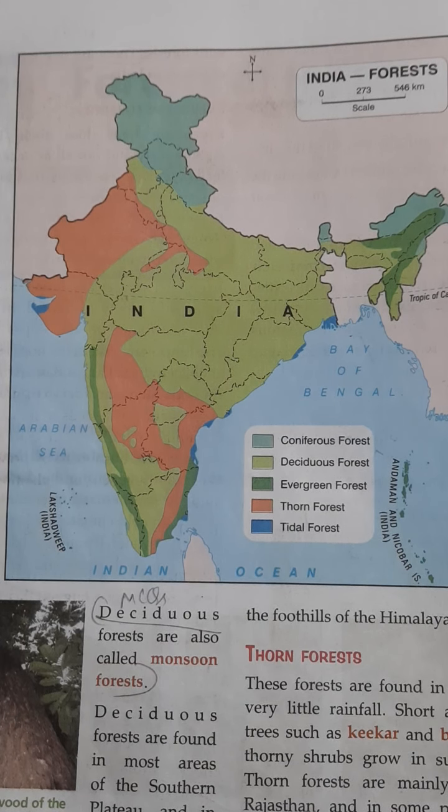Now students, just look at the map very carefully. With the help of this map, we will learn in which part of India we find these types of forests. Let's start with coniferous forest. I have already told you that these forests are mostly covered with tall and cone-shaped trees.